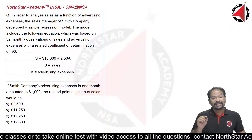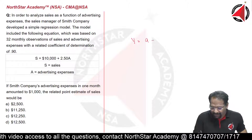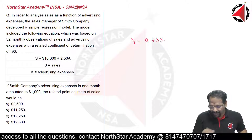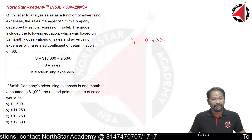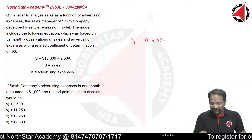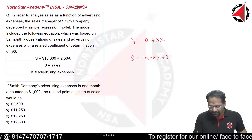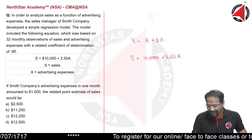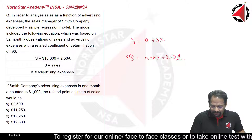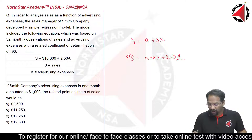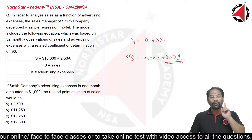This is a simple regression analysis question, denoted as Y = A + BX, where Y is a dependent variable and X is the independent variable. This same equation has been written as S = 10,000 + 2.50A, where A stands for advertising expenses. We need to find the total sales — the dependent variable — given that the advertising expense for a particular month is $1,000.